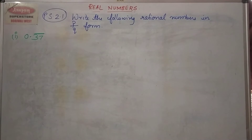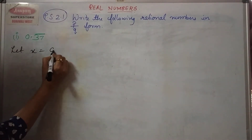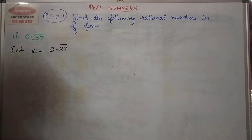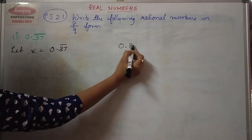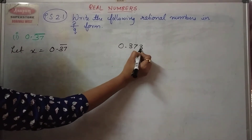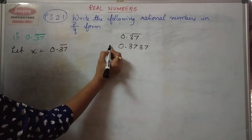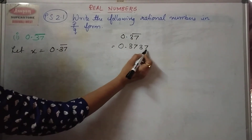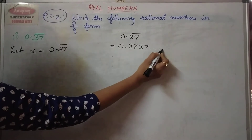Now let us understand the next example. We write: let x is equal to 0.37 bar. This means that 37 has been repeated. 0.37 bar means 3737 is repeating and it doesn't stop here; it goes on and on.